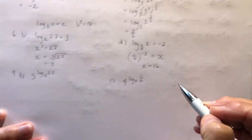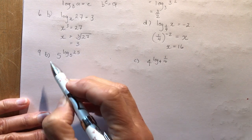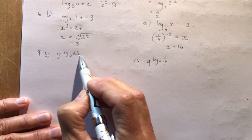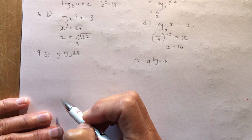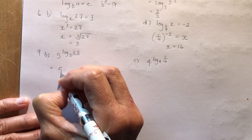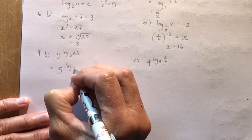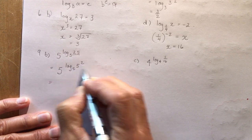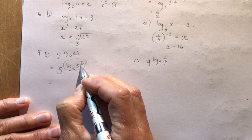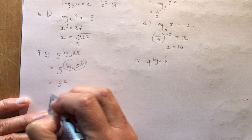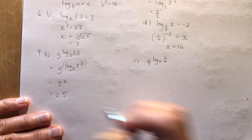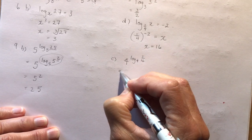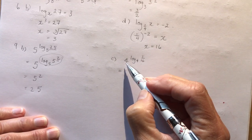5 to the power of log base 5 of 25 — you should know right away the answer is 25. If not, write it as log base 5 of 5 squared, which equals 2, so you have 5 squared, which gives 25 again.